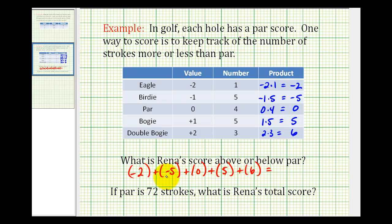Let's add these two negatives first. If we add two integers with the same sign, we add them and keep the sign. So negative two plus negative five is equal to negative seven. The zero is not going to affect the sum, and then we have five plus six, which is equal to eleven.